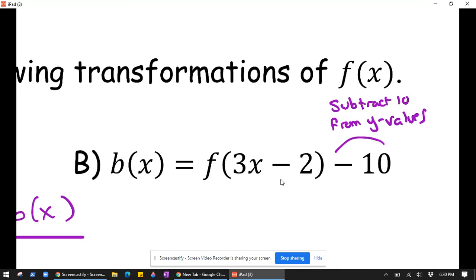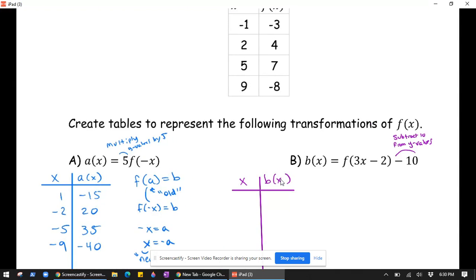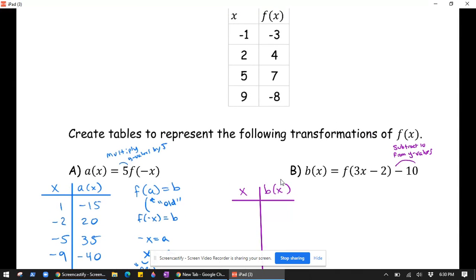Good, so we can do that right away. That's the only transformation affecting y values. So negative 3 minus 10 is negative 13, 4 minus 10 is negative 6, 7 minus 10 is negative 3, and negative 8 minus 10 is negative 18. So the y values are done.